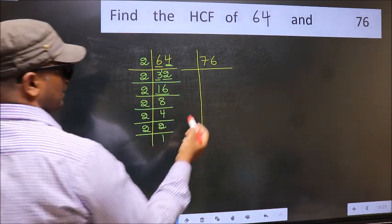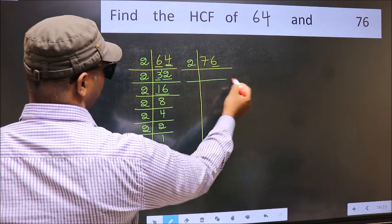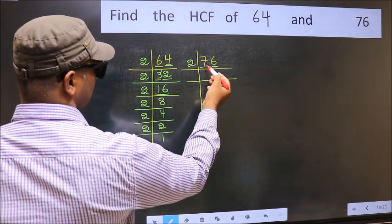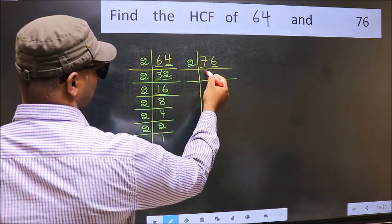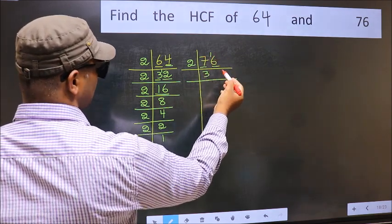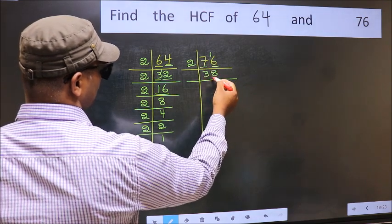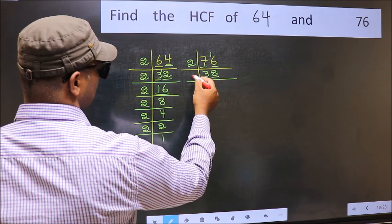Now the other number. Last digit 6 is even, so take 2. First number 7, a number close to 7 in 2 table is 2, 3, 6. 7 minus 6 is 1, carried forward 16. When do we get 16 in 2 table: 2, 8, 16. Now last digit 8 is even, so take 2.